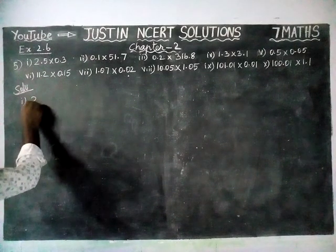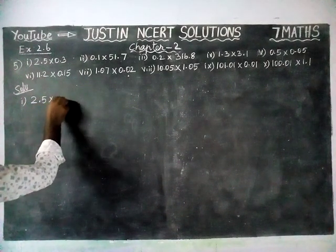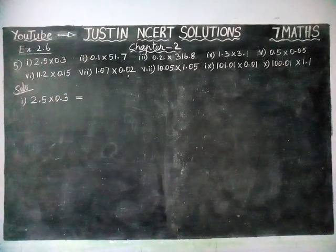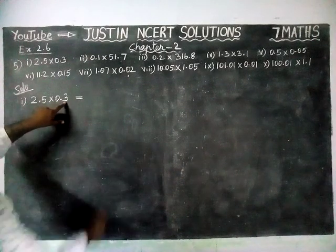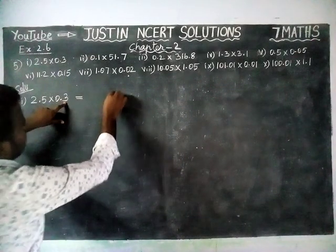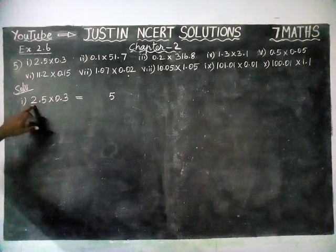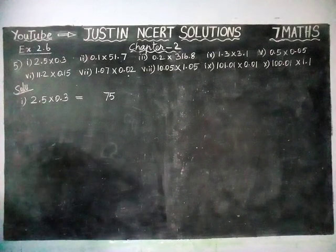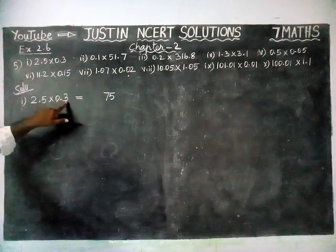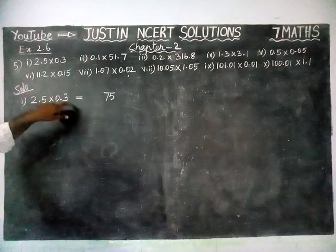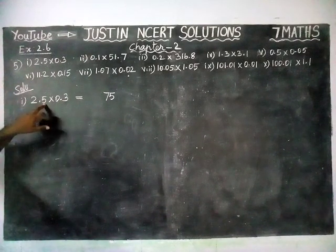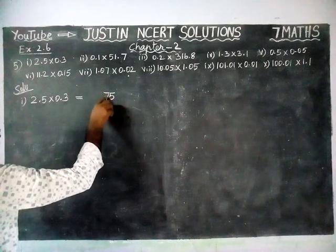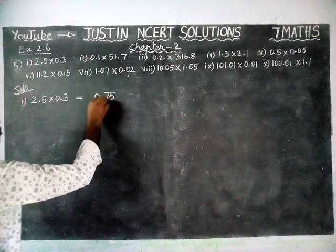The first sum: 2.5 into 0.3 is equal to... First, we have to multiply the numbers as they are. 5 threes are 15, remaining 1. 3 twos are 6, 6 plus 1 is equal to 7. Now we have to consider the total number of decimal points. Here we have 2 decimal digits — 1 decimal digit and 1 decimal digit — so totally 2 decimal digits. So from the right hand side, we count 2 decimal places: 1, 2. So the answer is 0.75.